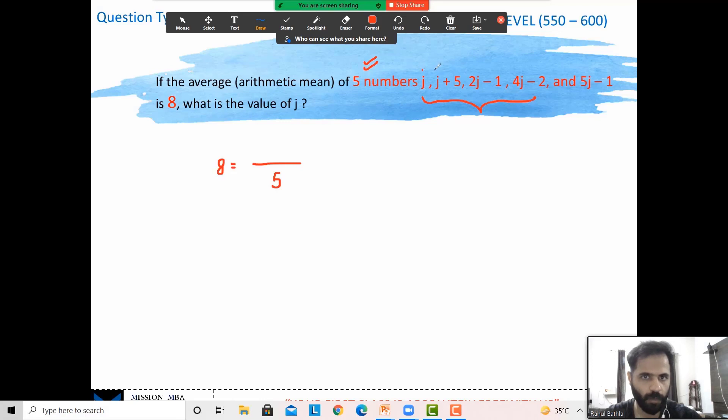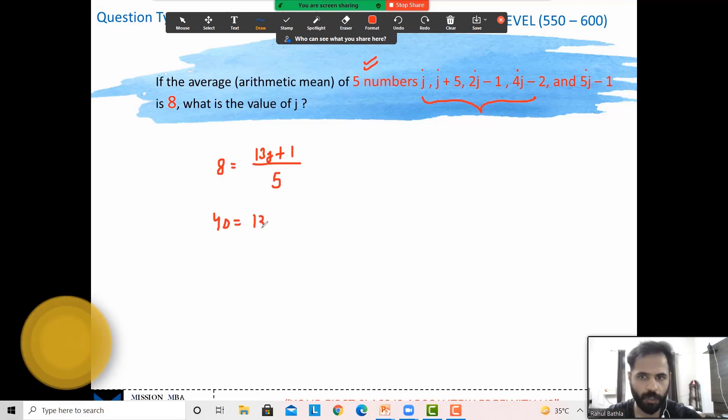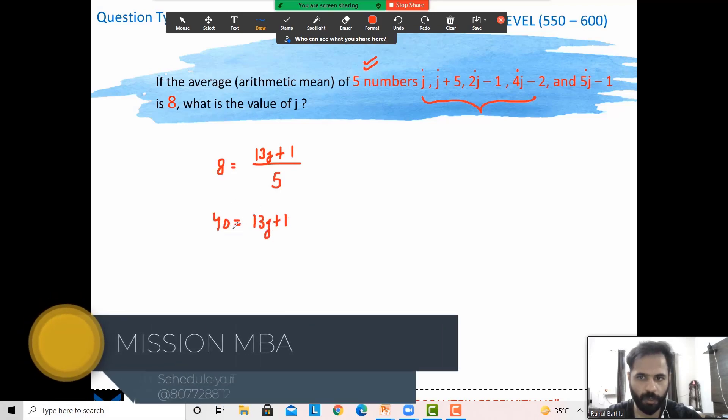But remember, two minutes: quickly calculate, don't write all the numbers. First count the j's: 1, 2, 3, 4, 4 and 4, 8, 8 and 5—13. So total I have 13 j's. How many ones? Let's calculate: 5-1, 4-2, 2-1, so that's 13j plus 1.